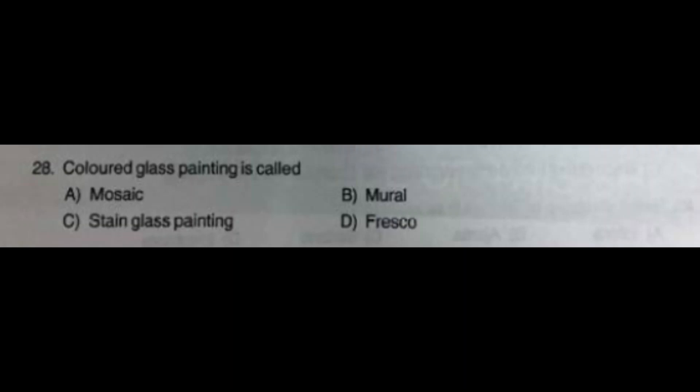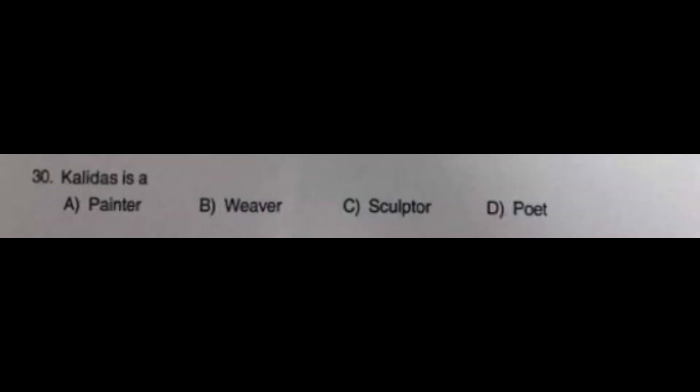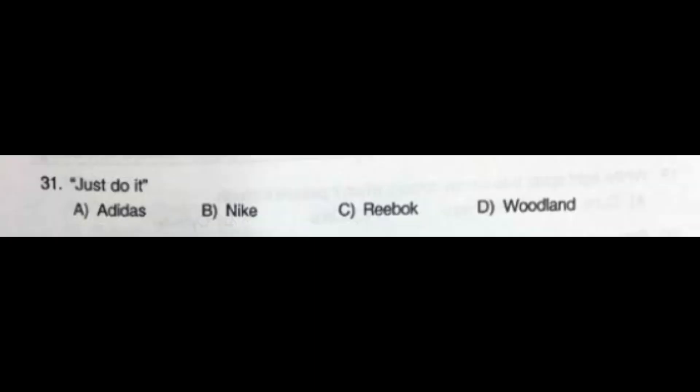Question number 29: Dash is a clay that is heated to very high temperature — option A: Sculpture, option B: Ceramic, option C: Tempera, option D: Cereal. The correct answer is option B: Ceramic. Question number 30: Kalidas is a — option A: Painter, option B: Weaver, option C: Sculptor, option D: Poet. The correct answer is option D: Poet.